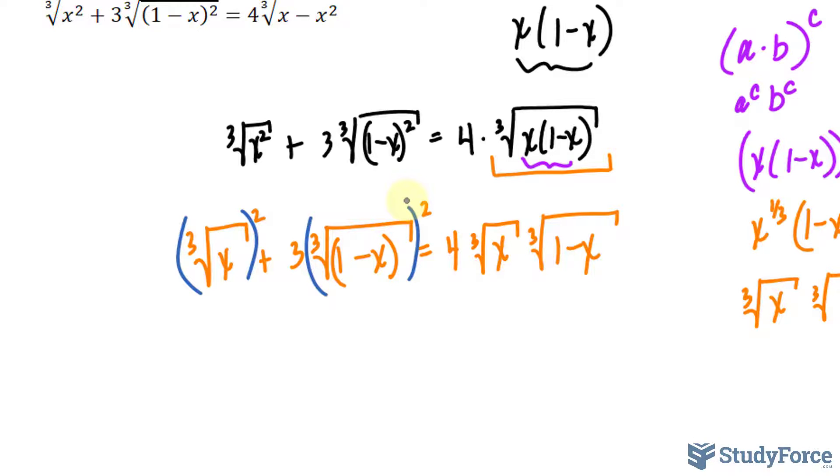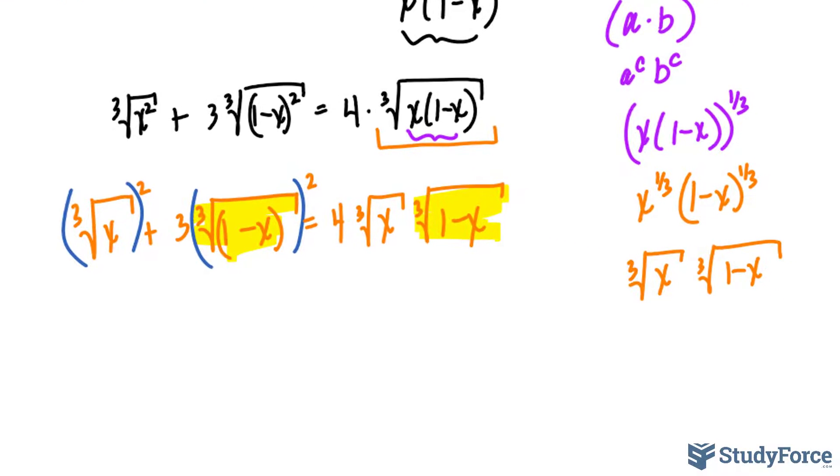Using what I have now, I used algebraic substitution to replace expressions here that are more complicated with a variable that's easier to work with. For example, notice that we have this factor and that factor that look identical. Rather than using those, let's replace them with the letter m.